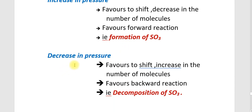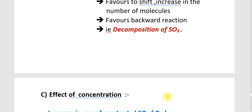If pressure decreases, it favours the side with an increase in the number of molecules, that is it favours the backward reaction — decomposition of SO3 will take place. Conversely, increasing pressure favours the forward reaction and formation of SO3.